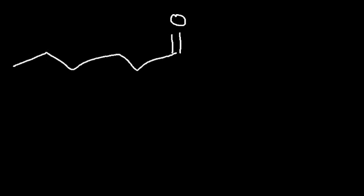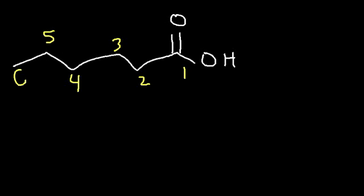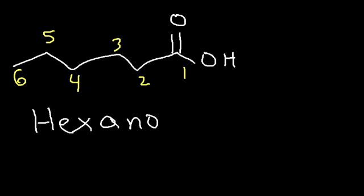Let's start with this one. We have a 6-carbon carboxylic acid. The first thing you want to do is count the longest chain. We have a total of 6 carbons. 6 carbons is associated with the name hexane, but instead of calling it hexane, it's going to be called hexanoic acid.